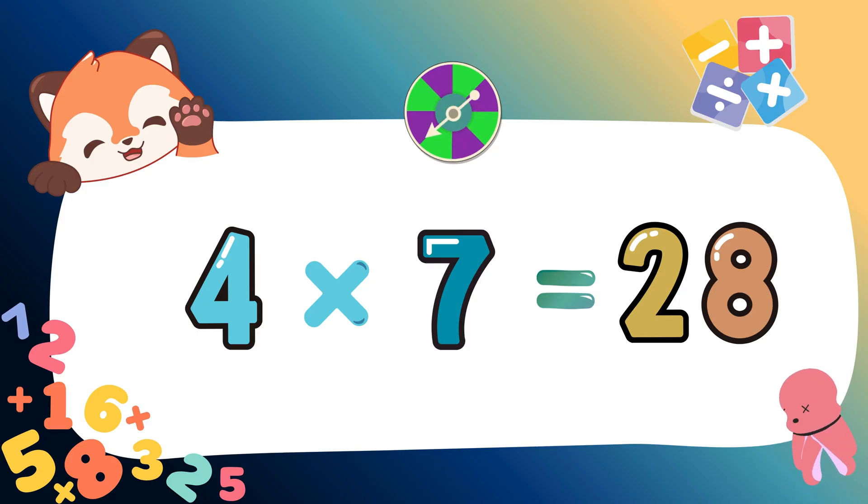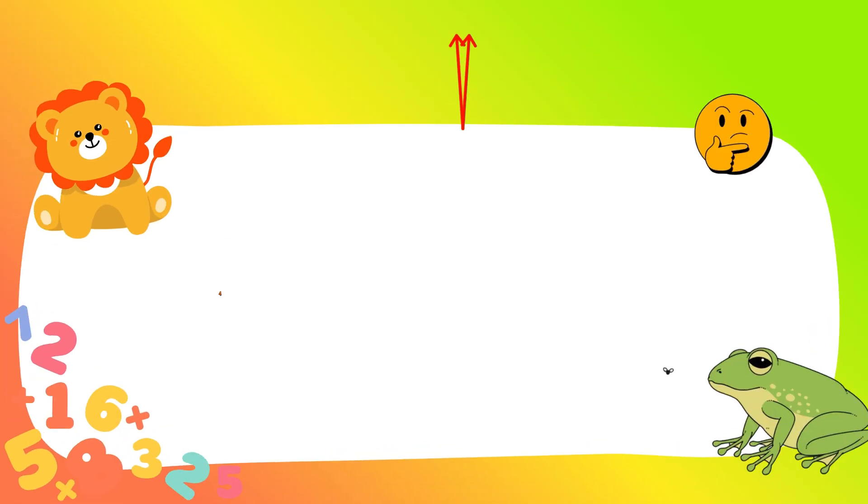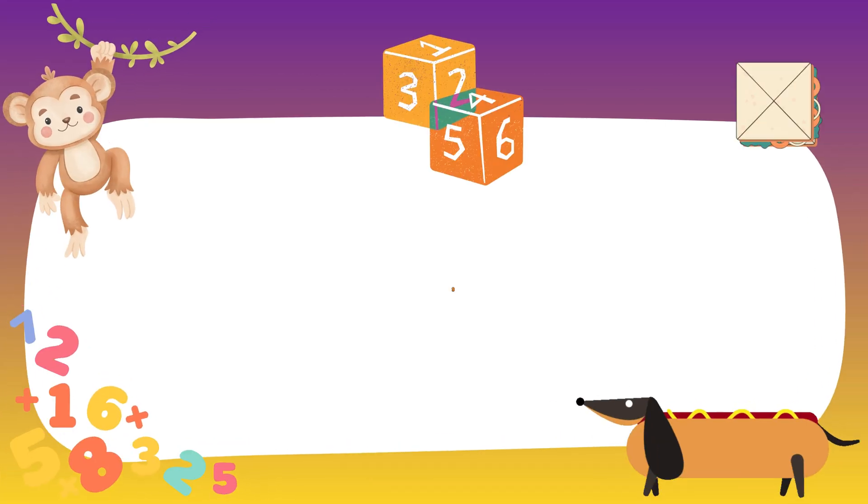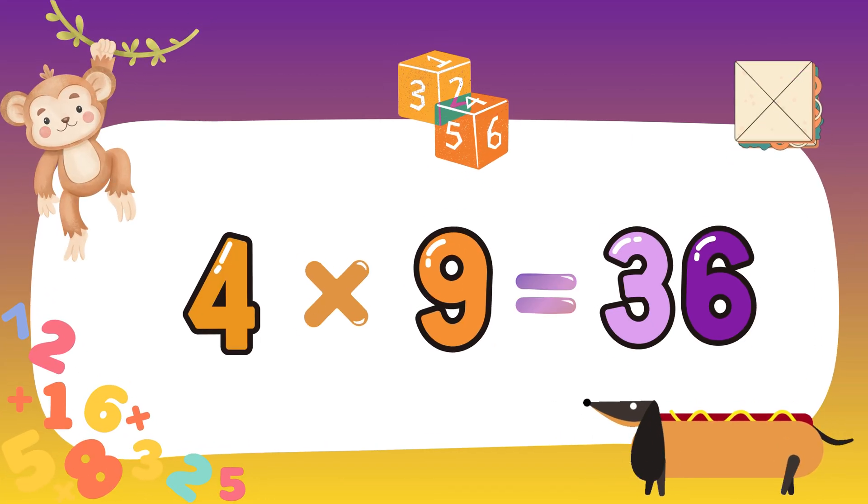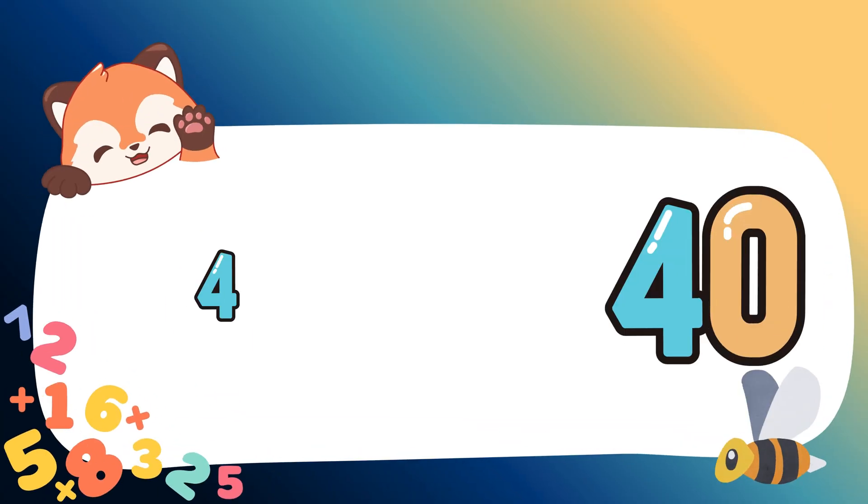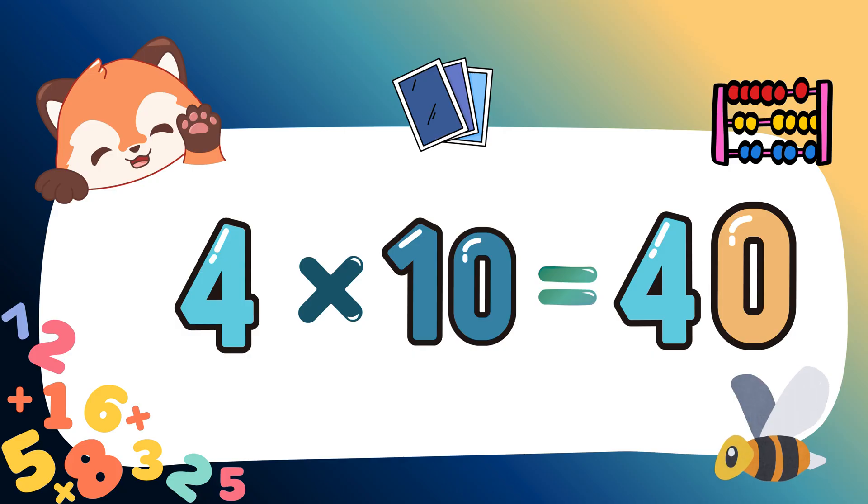You're doing great! That's really neat! Four eights are thirty-two. Four eights are thirty-two. Four nines are thirty-six. Four nines are thirty-six. Four tens are forty. Four tens are forty.